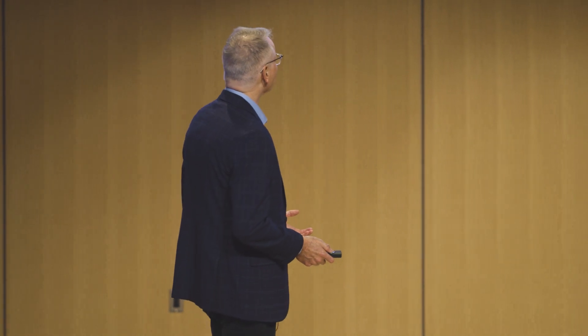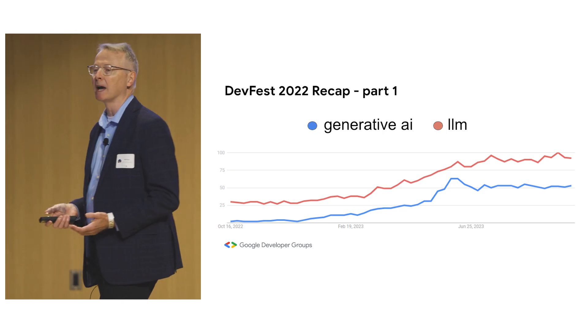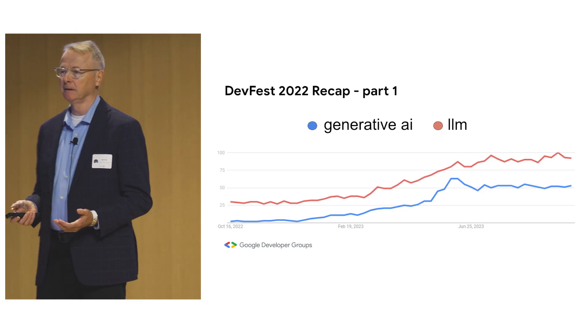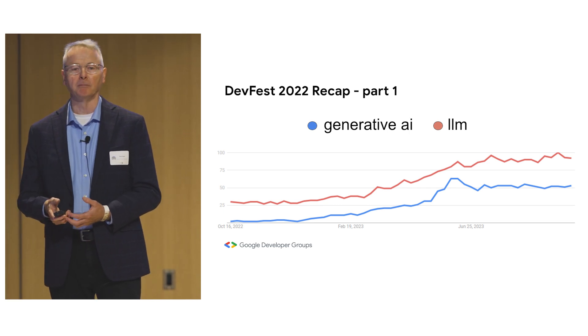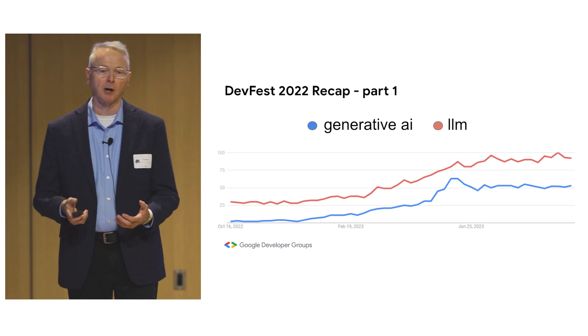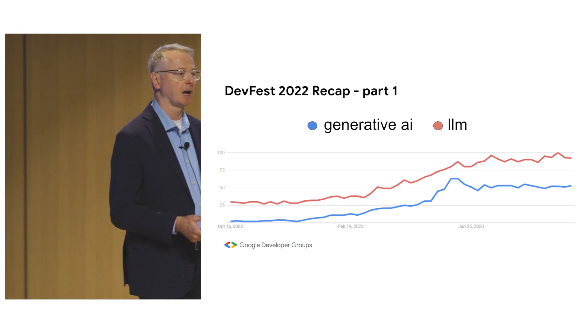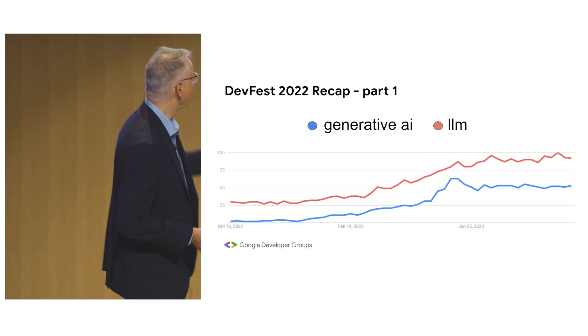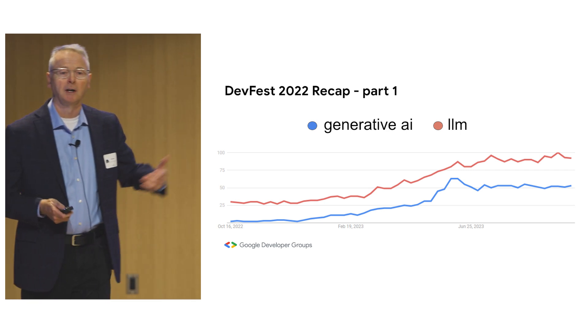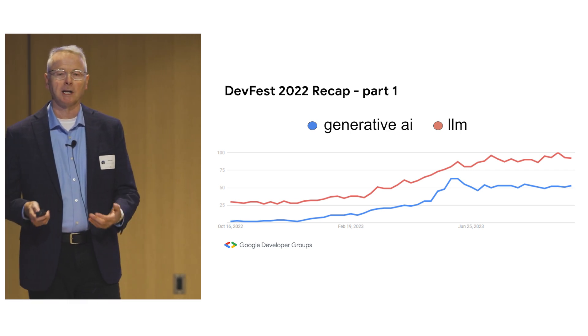I really struggled at that time — how do I describe this class of models? Luckily, the term generative AI came out, and this really encapsulated large language models, text-to-image models, and other kinds of models. You can see from this Google Trends chart the popularity of the term generative AI. This is something that really became established.